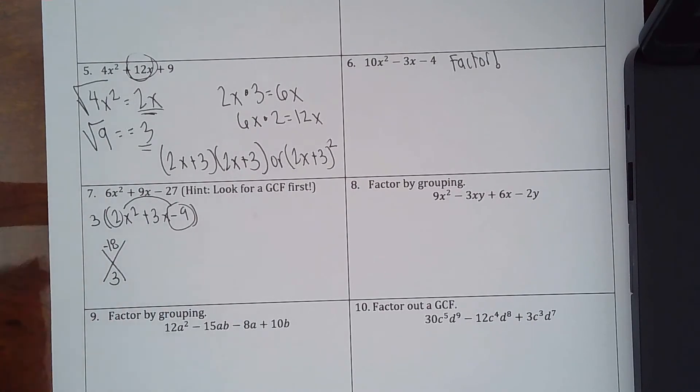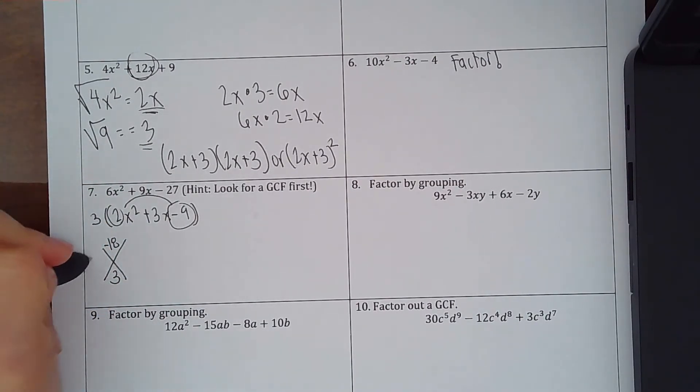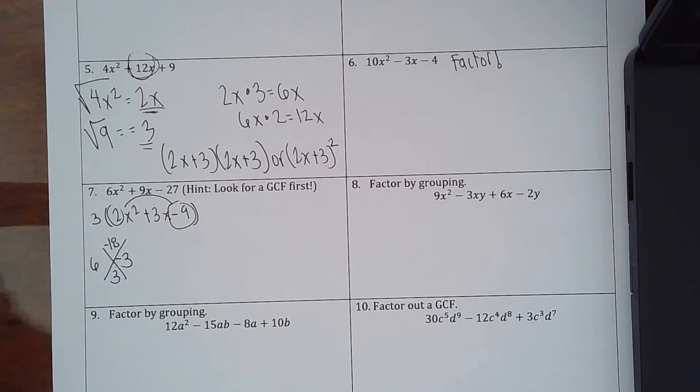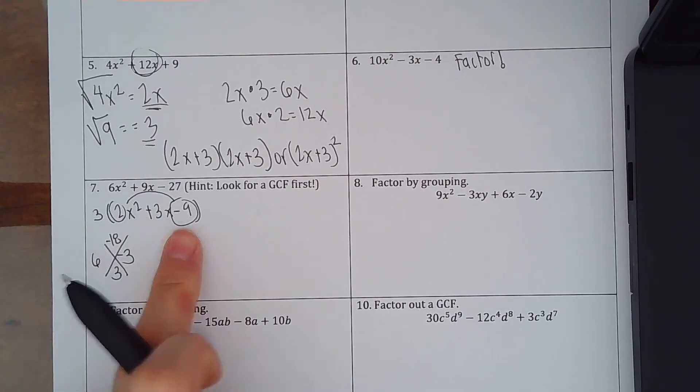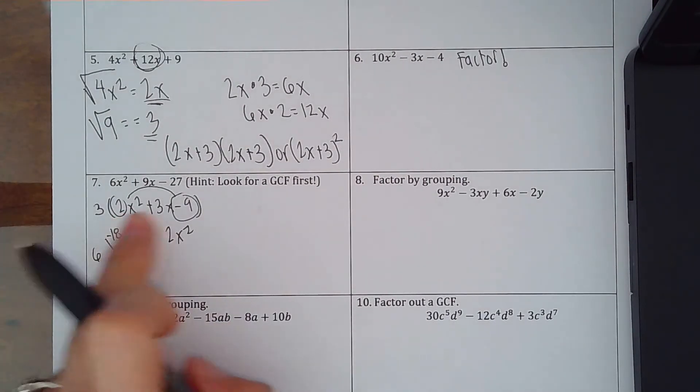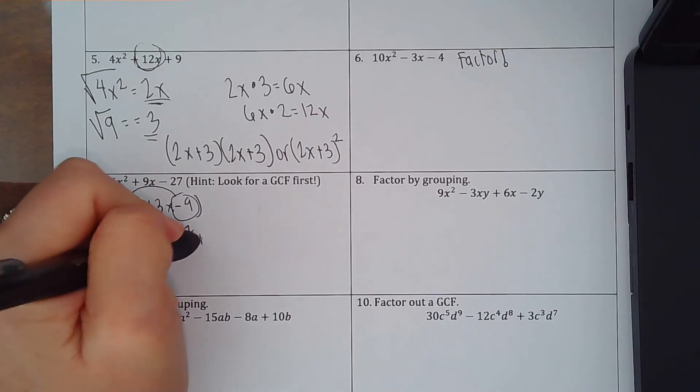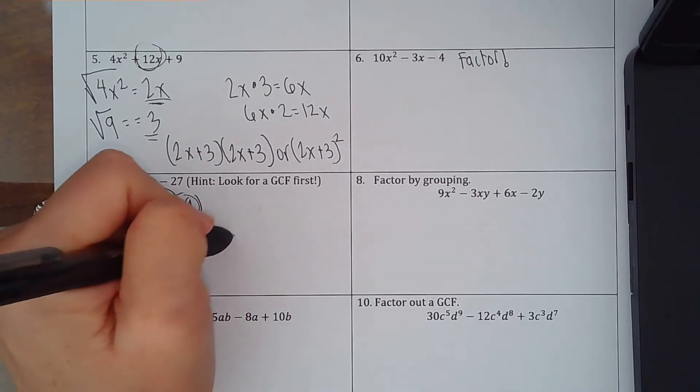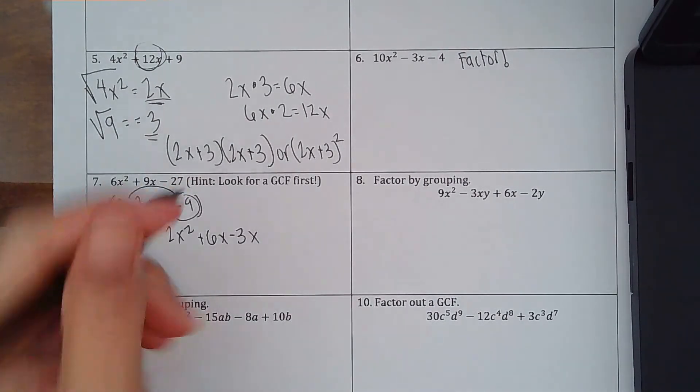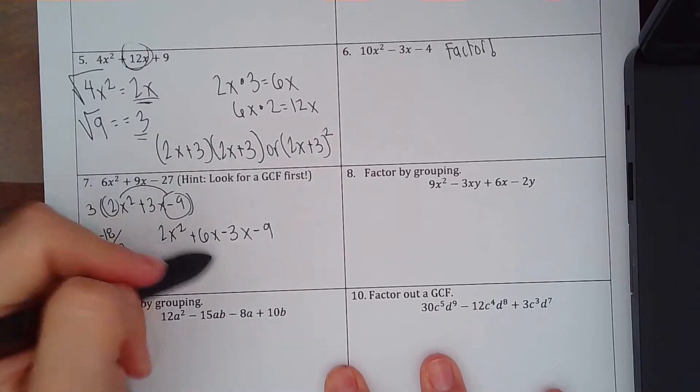And I'll think, hey, what multiplies to negative 18 but adds to a positive 3? Well, that would be 6 and negative 3. Okay, great. Now I can just factor it. So I'm going to take 2x squared, the start of the problem right here. Now plus 6x minus 3x minus 9. And I'm just going to factor by grouping.